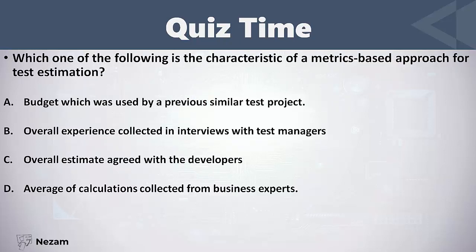Which of the following is the characteristic of a matrix-based approach for test estimation? The options are: budget used by a previous similar test project, overall experience collected in interviews with test managers, overall estimate agreed with the developers, average of calculations collected from business experts. To find the correct answer, search for the option that has a specific number or value. The first answer says the budget used in the previous project — this is a specific number, for example twenty thousand dollars. All other choices refer to some estimate, average, or general experience, not a specific number.